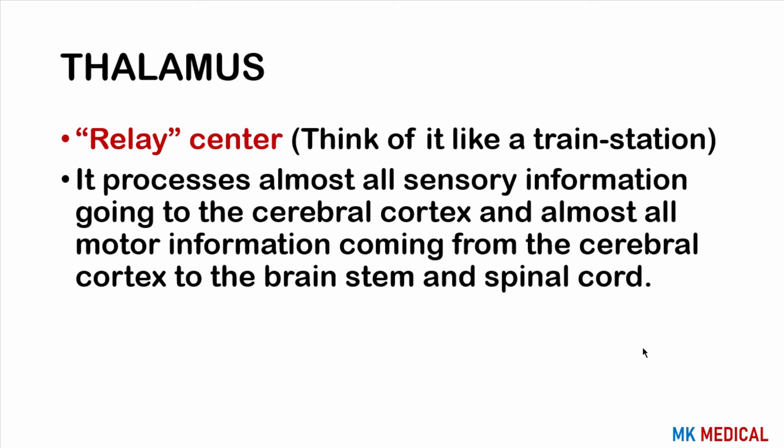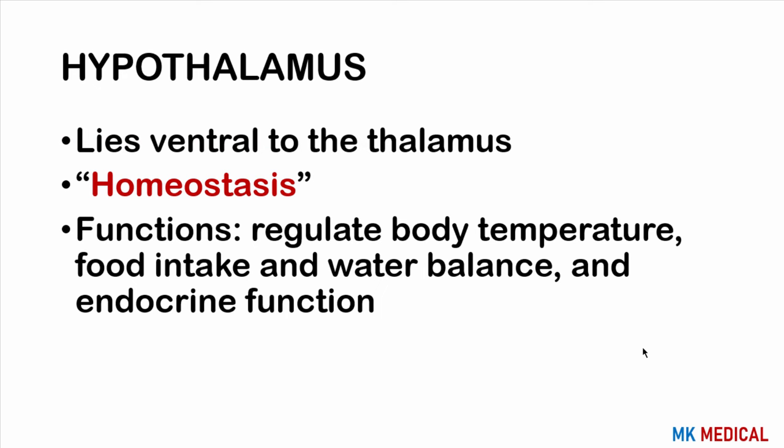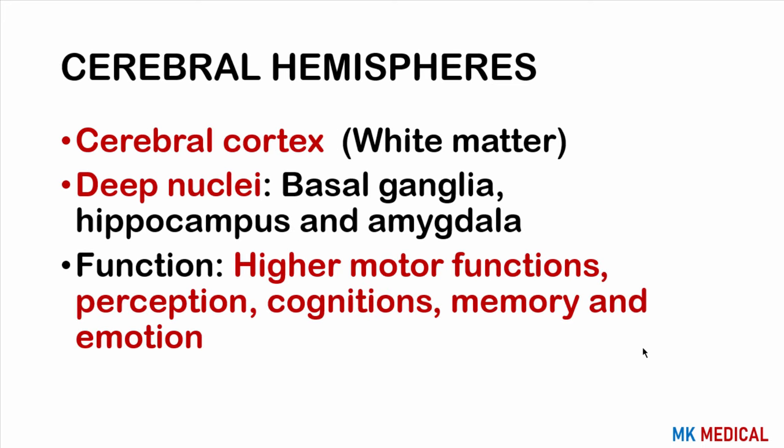The hypothalamus lies ventral to the thalamus and functions as a homeostasis center. It regulates body temperature, food intake cycles, sleep and wakefulness cycles, water balance, and endocrine functions. The hypothalamus controls secretions of glands and hormones produced by the anterior pituitary, and also produces certain hormones released by the posterior pituitary gland.